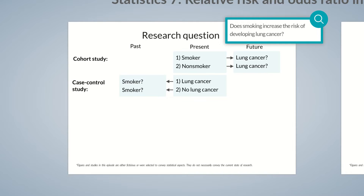In both studies, we compare two different groups. These are smokers and non-smokers in the cohort study, and disease-affected individuals and healthy controls in the case-control study. Accordingly, different aspects are measured in both studies. On the one side, we're comparing the occurrence of lung cancer in the cohort study. On the other side, we're comparing the smoking status in the case-control study.